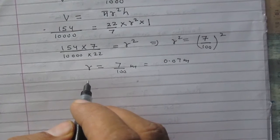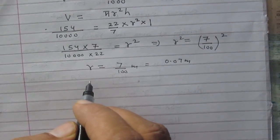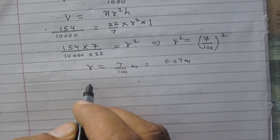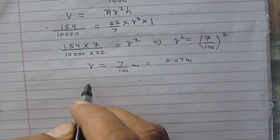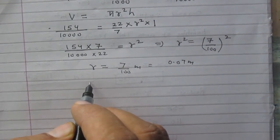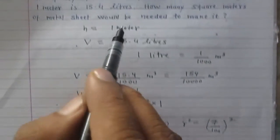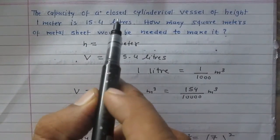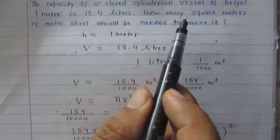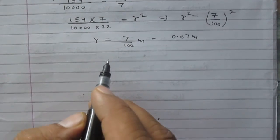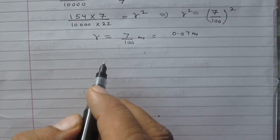Now we are to find the area of metal sheet needed to make this cylinder. Since it is a closed cylinder, we will find the total surface area of this cylinder.